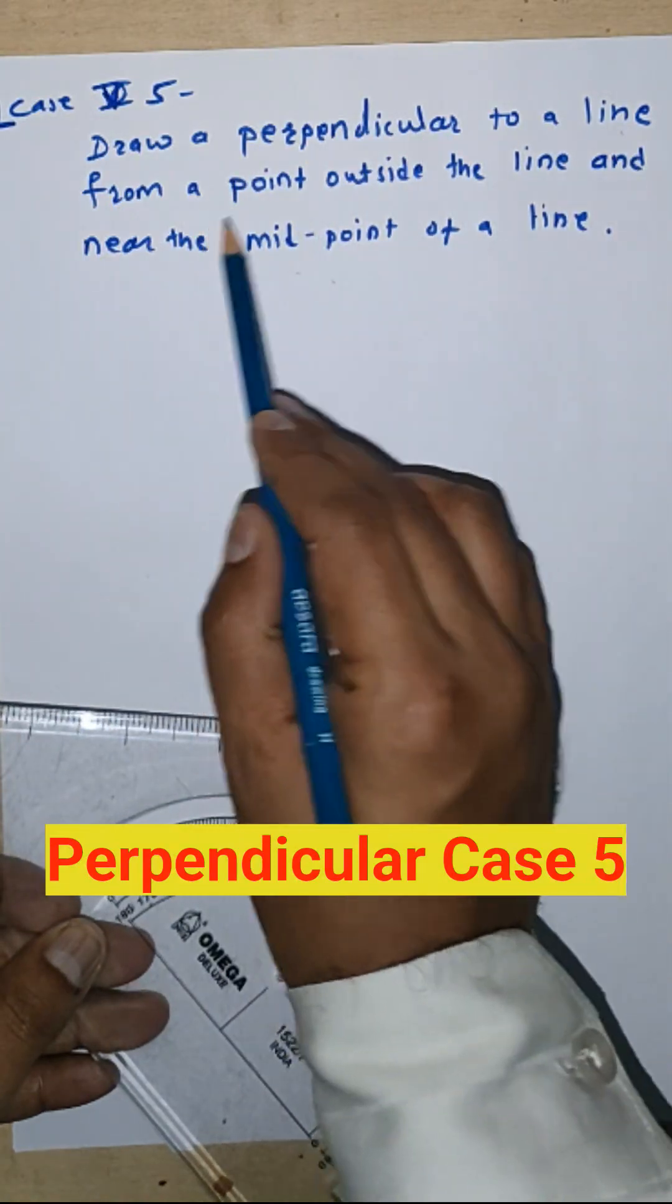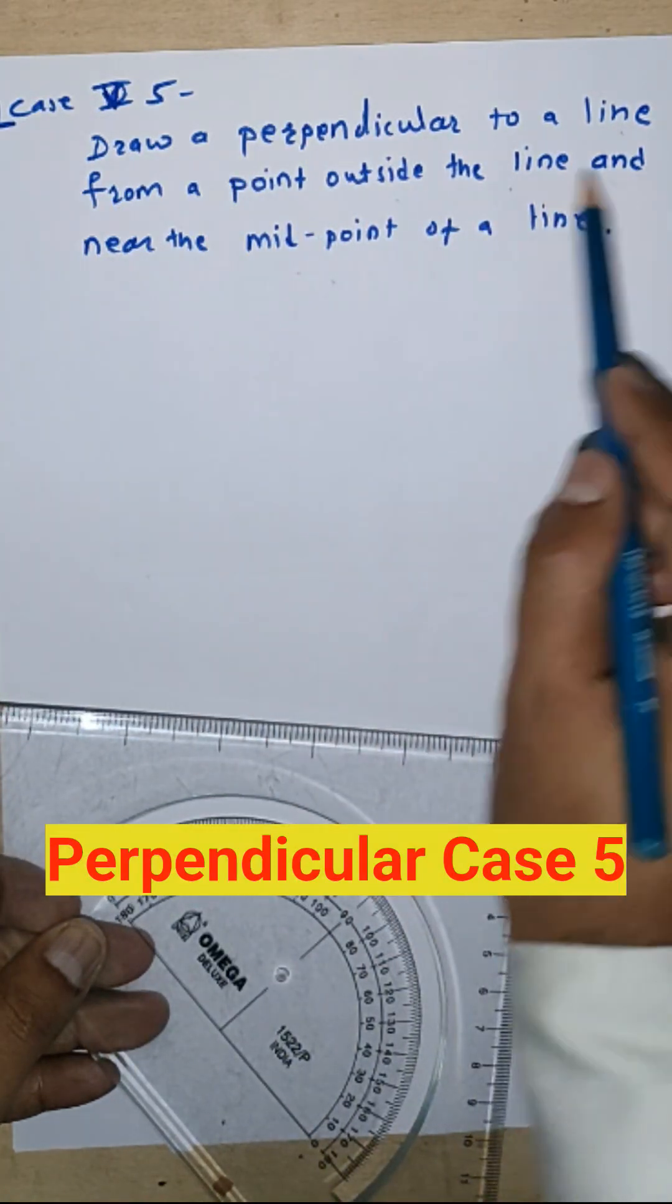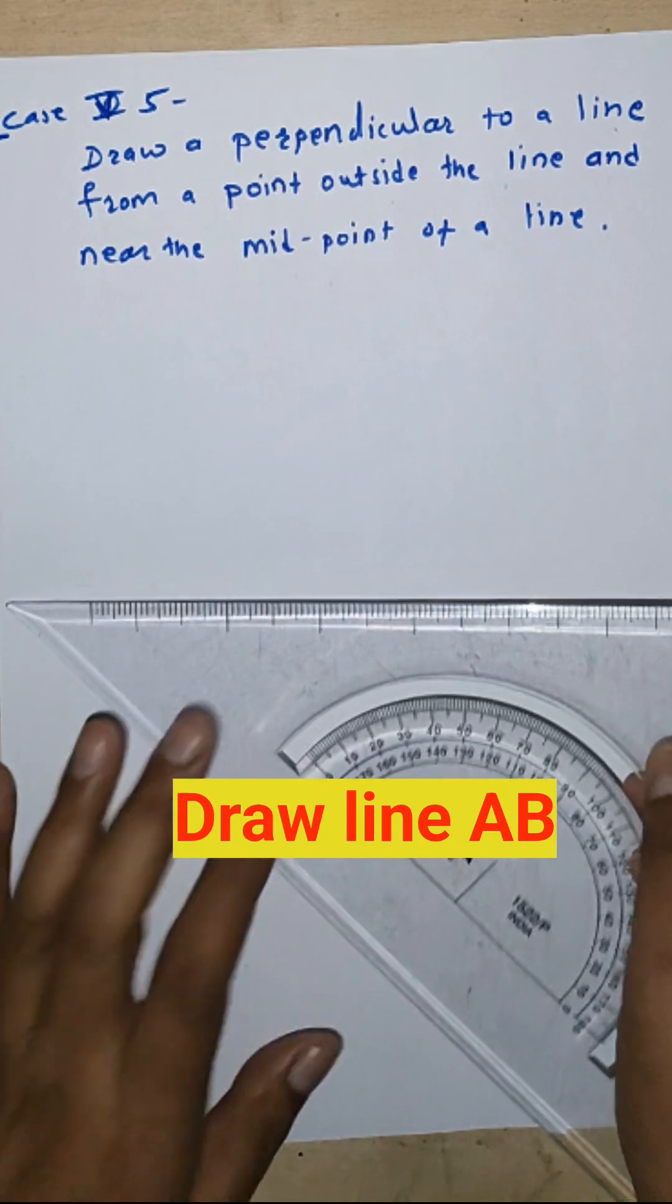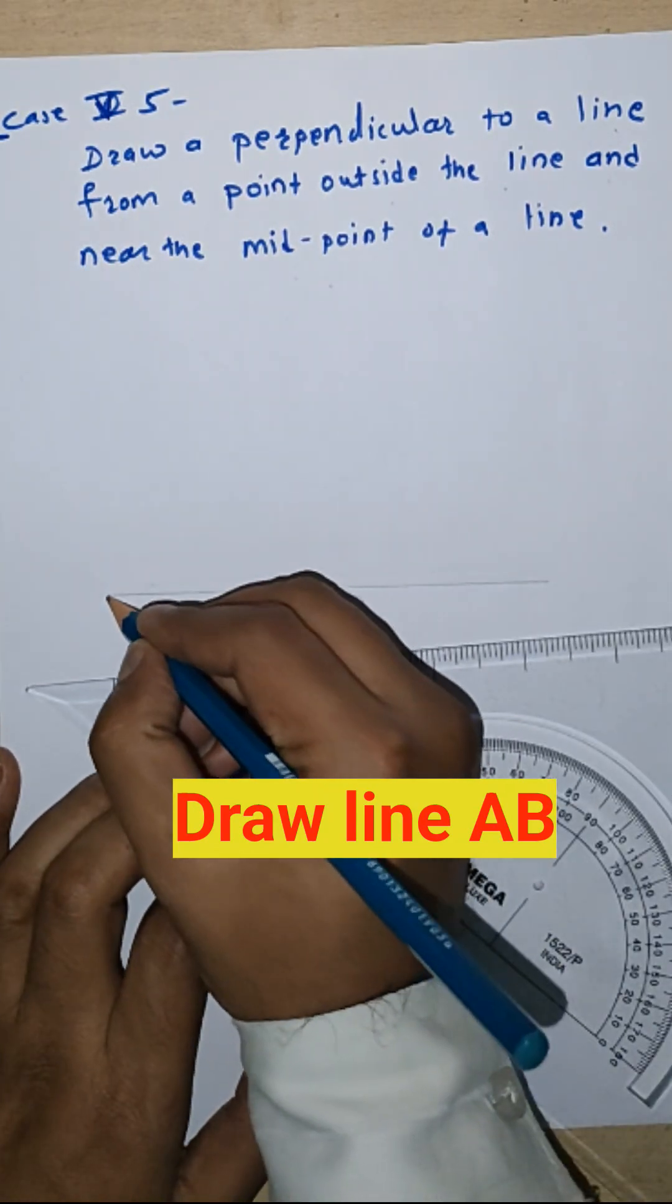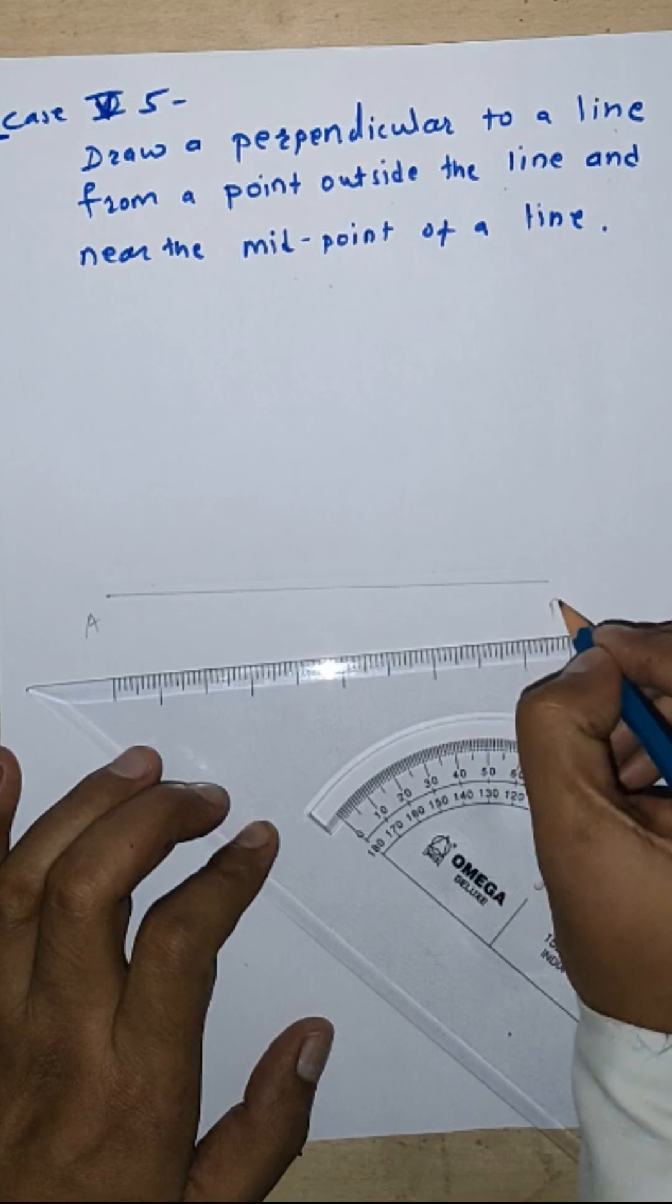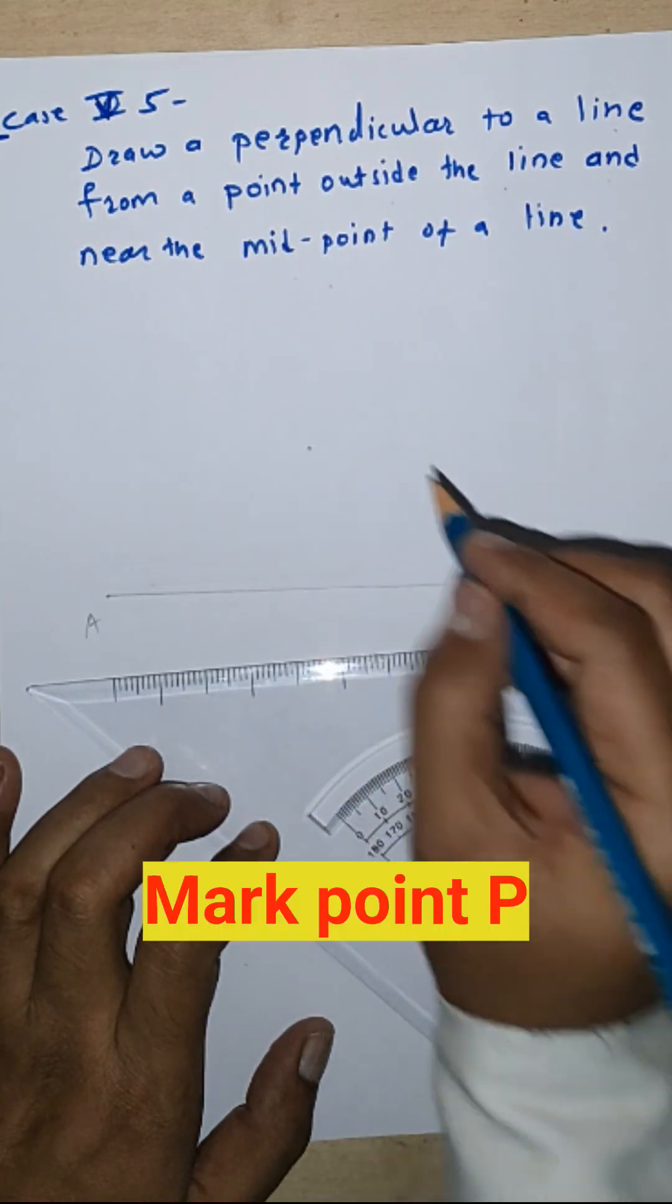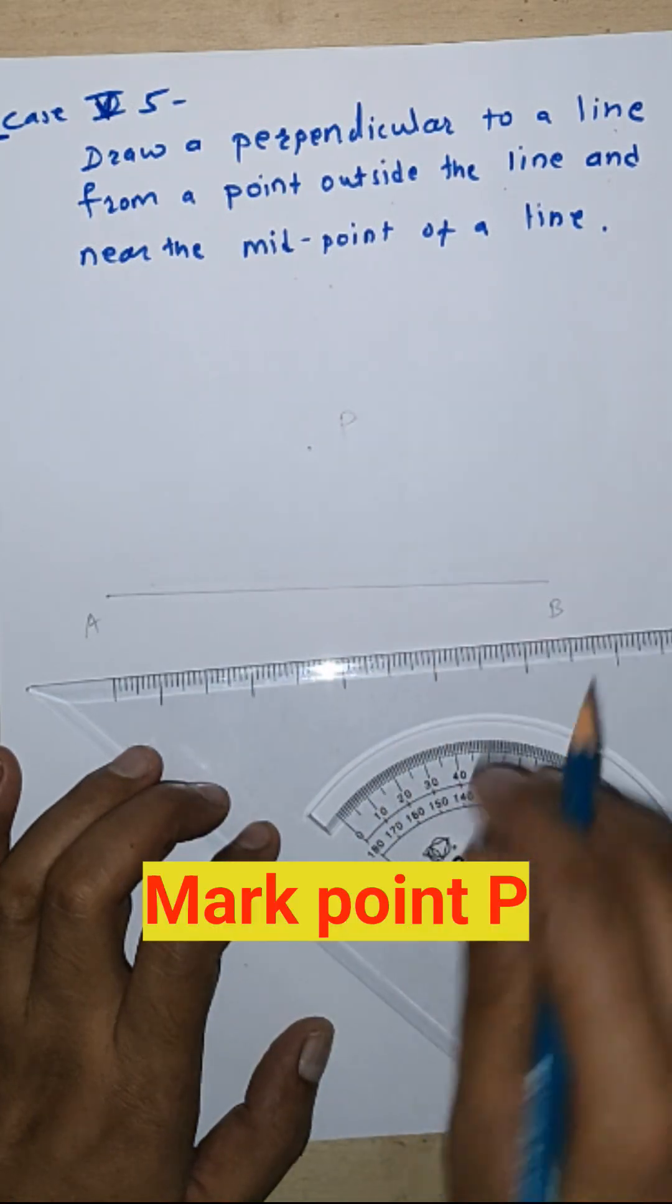Draw a perpendicular to a line from a point outside the line and near the midpoint. Draw any line AB, outside it and near the midpoint. This will be point P.